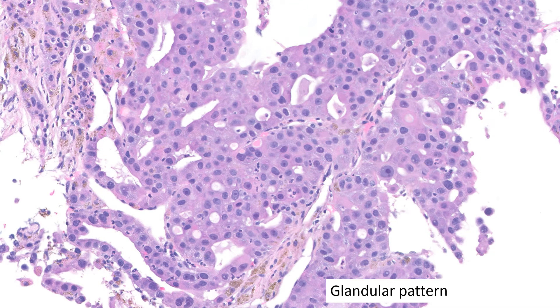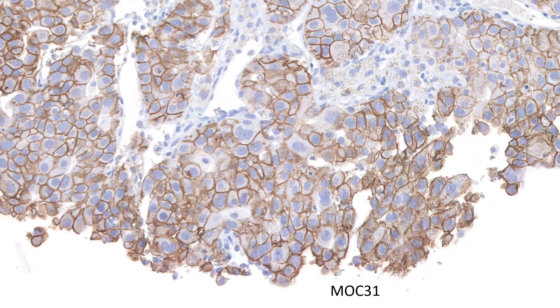The glandular pattern of HCC is the pattern that causes the greatest mischief. In fact, this one was originally called metastatic adenocarcinoma, and you can see why — the cells look hepatoid, but there's beautiful glandular formation. To compound that, someone did a Mach 31 stain and it was diffusely positive. A piece of advice: yes, Mach 31 is a marker for adenocarcinoma, but we don't really know how all HCCs stain, and clearly some HCCs stain positively for Mach 31. So it's not one of my favorite markers when the differential is HCC versus adenocarcinoma.